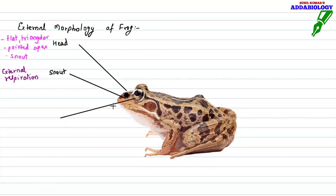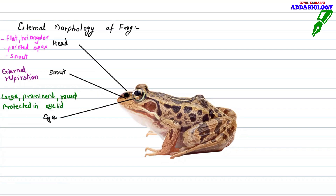The eye of the frog is quite large, prominent, and can be pulled back into the socket. Since frogs have no neck and cannot bend their head left or right, the eye is flexible — it can move towards the right and left side. So the eye is a compensation for the absence of a neck.